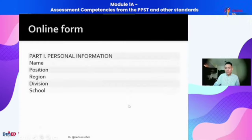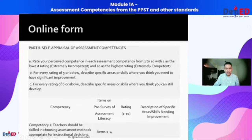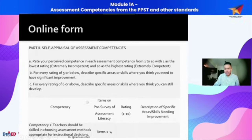So when you accomplish the form, put in your personal information, and then you will start to do your self-appraisal. When you do your self-appraisal, the assessment competencies are found in the first column, and you will be rating yourself on a scale of 1 to 10.